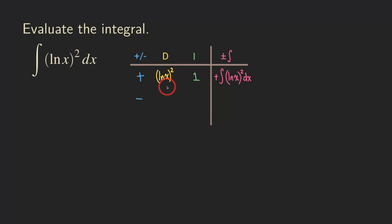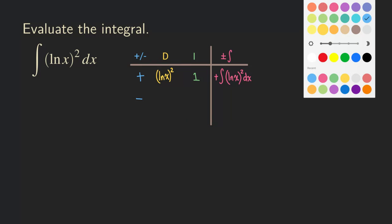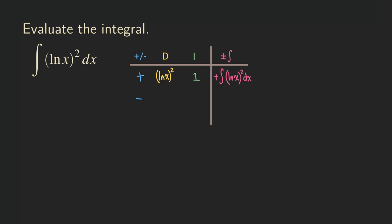Okay, so now we got to take the derivative of this ln of x squared. How do we do that? You got to use the power rule first. So bring down the two and then ln of x and then times one over x. One over x is the derivative of ln of x, the derivative of the inner function.